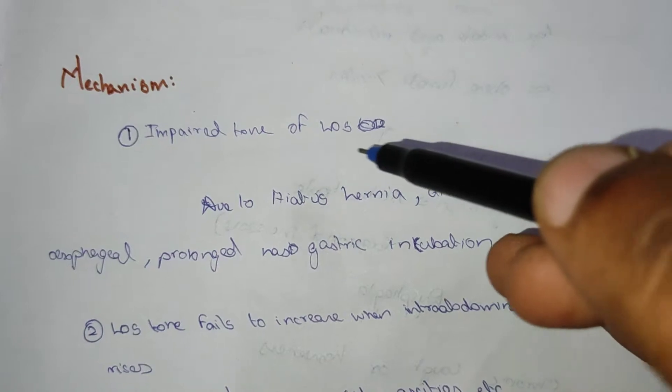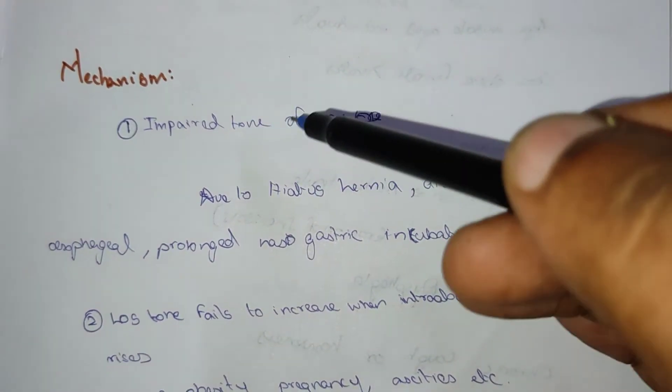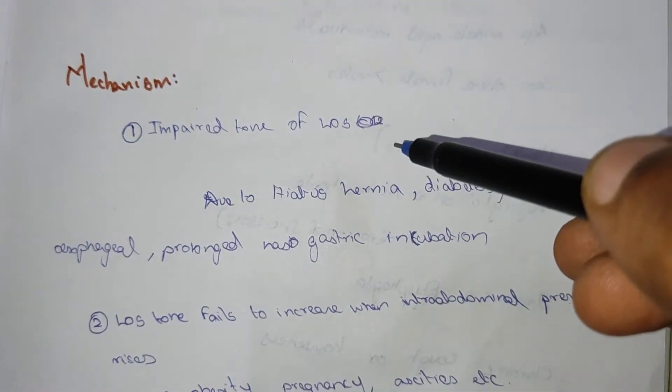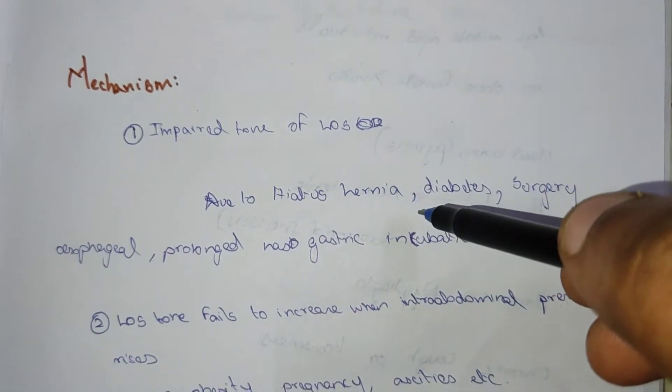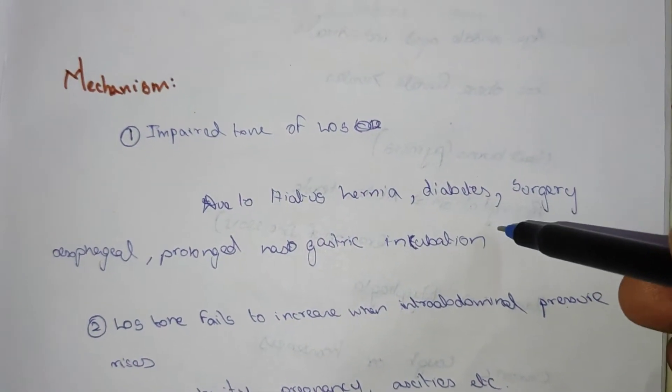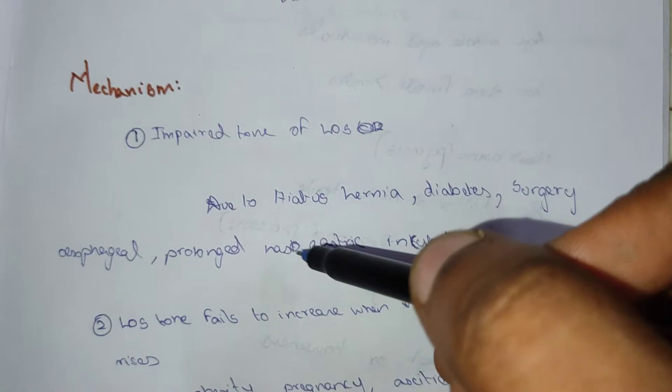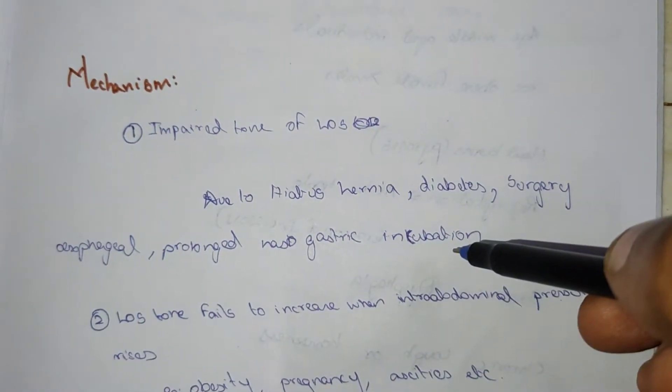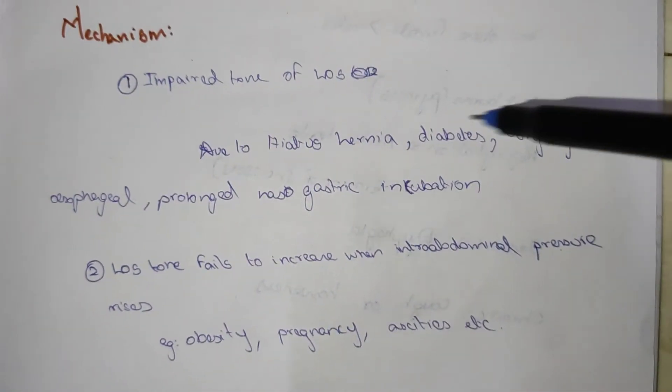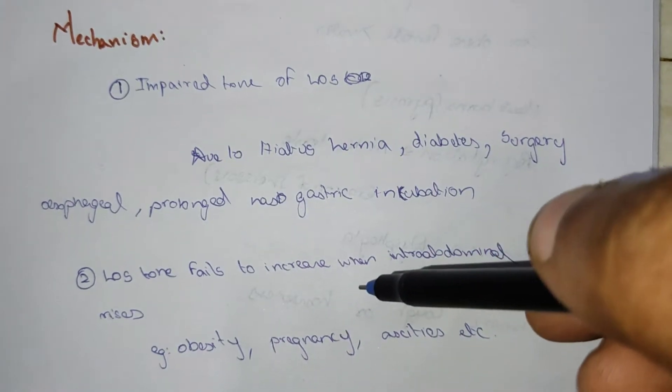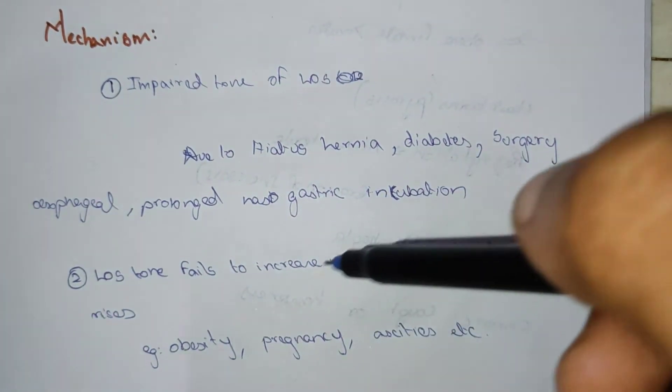Impaired tone of LES, lower esophageal sphincter. The tone of the lower esophageal sphincter is impaired due to hiatus hernia, diabetes, surgery, esophageal and prolonged nasogastric intubation, and loss of tone fails to increase when the intra-abdominal pressure rises.